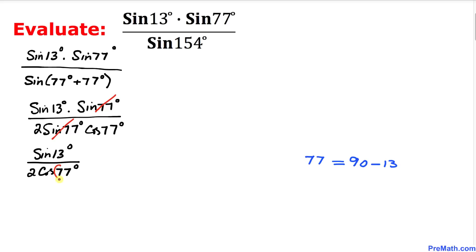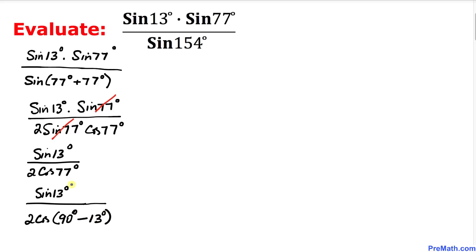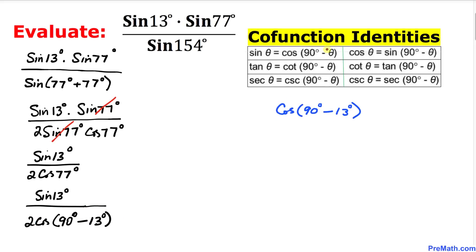Now let's focus on the 77 degrees. We can write 77 as 90 minus 13. So our problem becomes sine of 13 degrees divided by 2 cosine of 90 degrees minus 13 degrees. Let's focus on the denominator: cosine of 90 minus 13 degrees. Here is our co-function identities table.